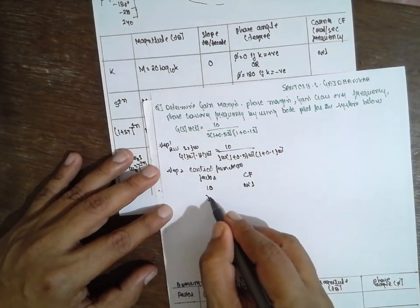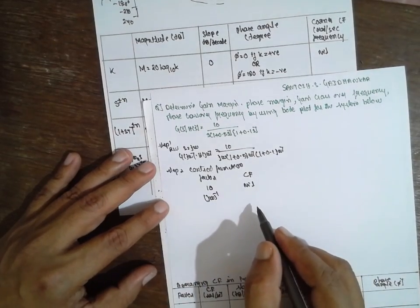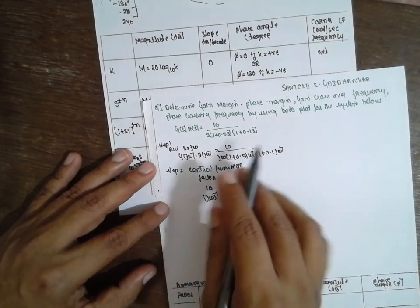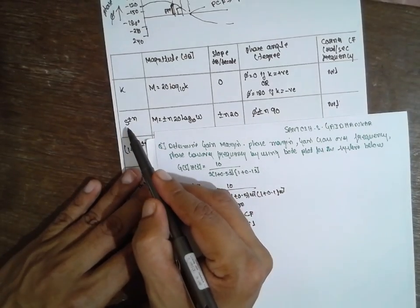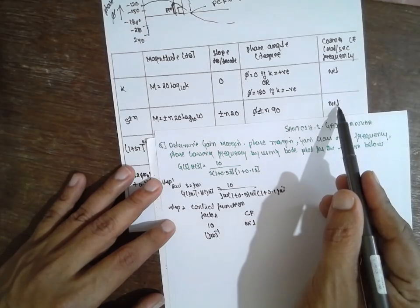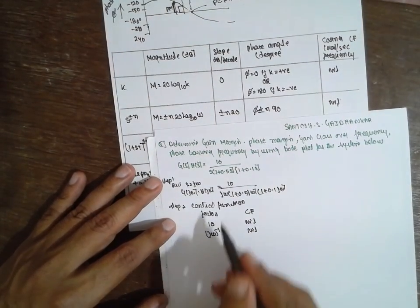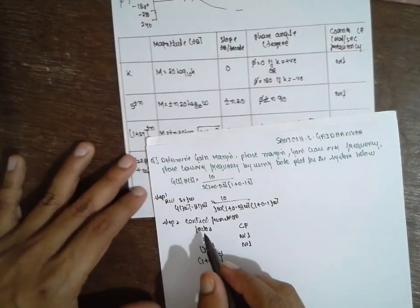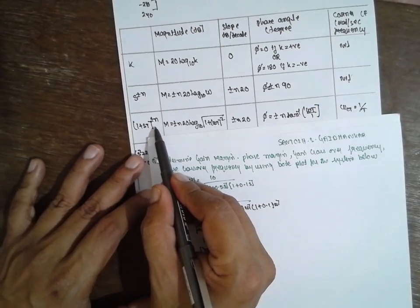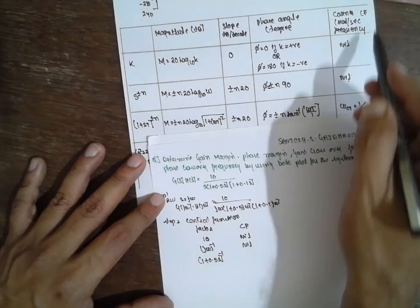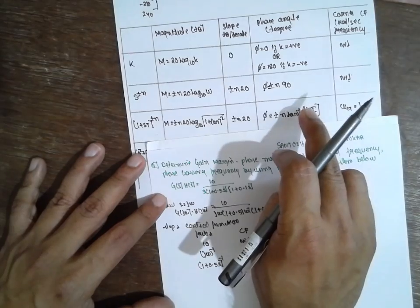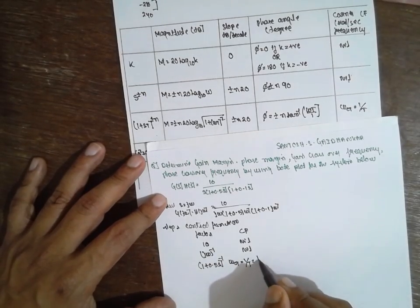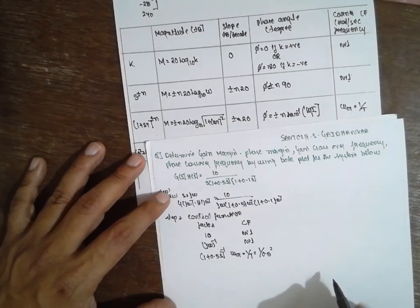Next, consider jω raised to minus 1 — because it is in the denominator. For this factor the corner frequency will be nil. Next, for (1 + 0.5s) raised to minus 1, the corner frequency ωtc = 1/T = 1/0.5 = 2 radian per second.